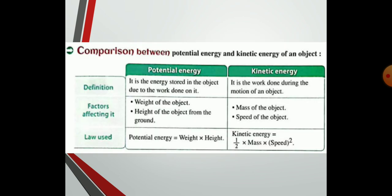Now it's time for a comparison between potential energy and kinetic energy. Definition — potential energy: it is the energy stored in the body due to work done on it. Kinetic energy: it's the work done during the motion of an object. Factors affecting them — potential energy: weight and height. Kinetic energy: mass and speed. Formula — potential energy equals weight times height; kinetic energy equals half mass times speed squared.